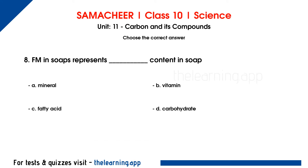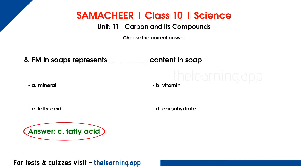Eighth question. FM in soap represents dash content in soap. Options are A. Mineral, B. Vitamin C, C. Fatty acid, D. Carbohydrate. The correct answer is option C, fatty acid. Fatty acid is an important ingredient in soap manufacturing. FM represents fatty acid in soap.